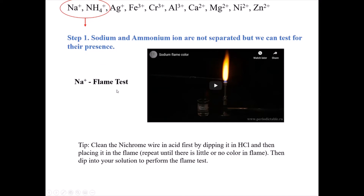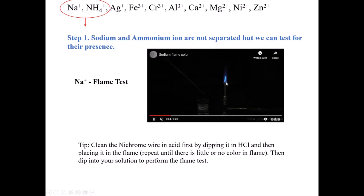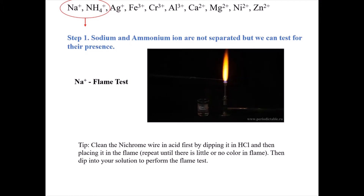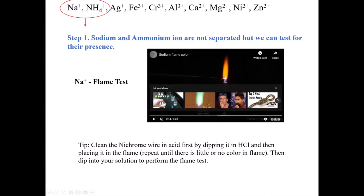Sodium is identified by the flame test. We know that sodium gives a nice yellow flame when put into a Bunsen burner. We take the unknown solution, place a clean nichrome wire into it, dip it in a little bit of HCl to clean it off, and then place it in the flame to see if we get a color. If you get a yellow flame, that's a good indication that sodium is present.